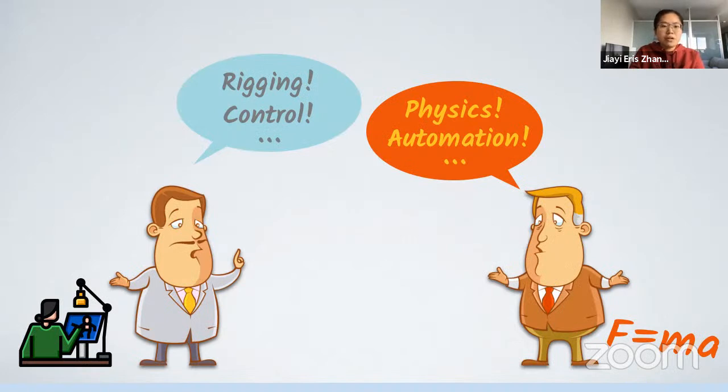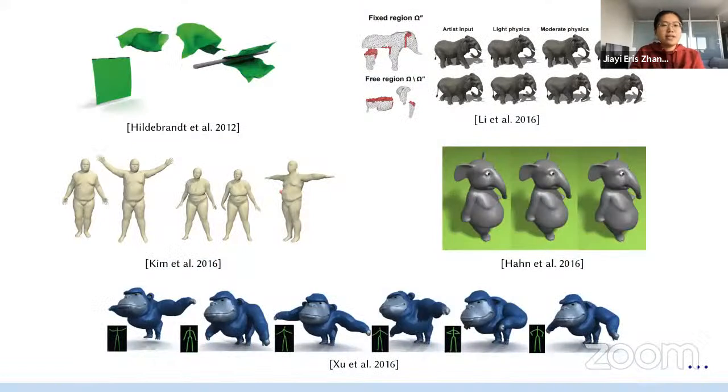Up to here, a paradox seems to appear. The artist's rig displacement can be treated as hard constraints, otherwise physics has no room for secondary effects. Meanwhile, physics can't have too much freedom so as to undo the artistic work.